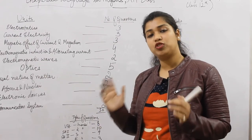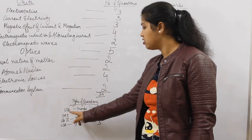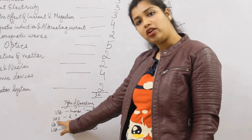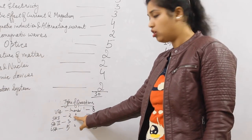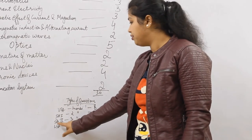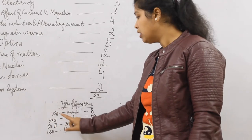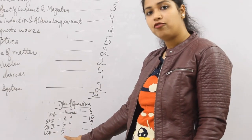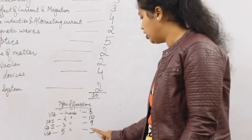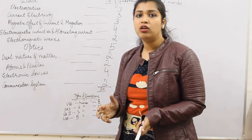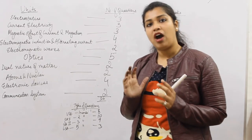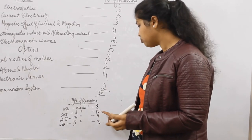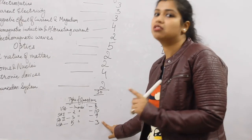If I talk about the types of questions which will be asked in the paper, there will be four types: very short answer questions of one mark each — eight questions in total; short answer type 1 questions of two marks each — ten questions in total; short answer type 2 questions of three marks each — nine questions in total; and long answer questions of five marks each — three questions in total. Overall choice will not be there in the paper — you have to attempt all 30 questions — but internal choices will be given in one question of two marks, one question of three marks, and all three questions of five marks.